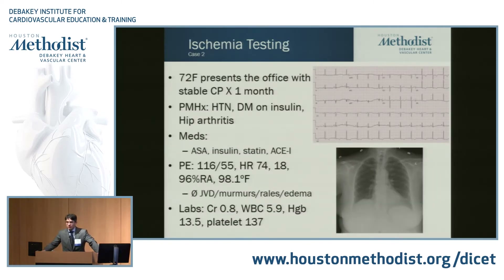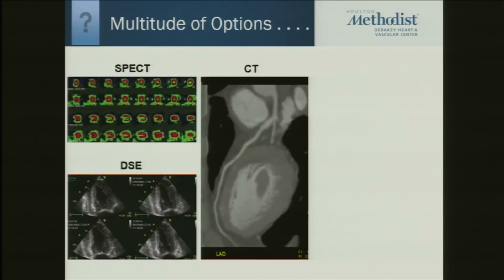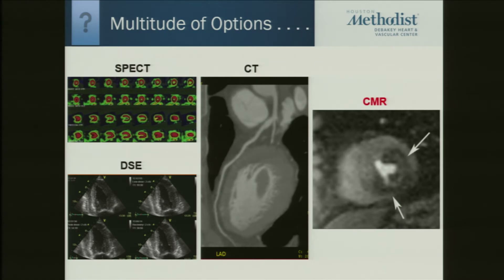The next application is very common: a 72-year-old female presents with chest pain and typical risk factors of hypertension and diabetes. She has arthritis, is not able to exercise, is on good medications, and her physical exam, labs, and EKG are normal or show nonspecific changes, with some LVH and a normal chest x-ray. You have a variety of stress testing options — SPECT, dobutamine stress echo, cardiac CT — but my job is to convince you there's another option: Stress CMR.